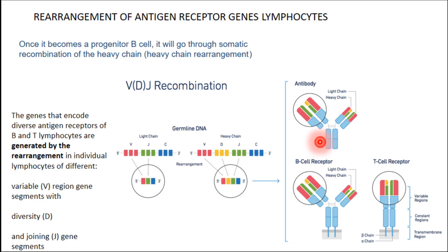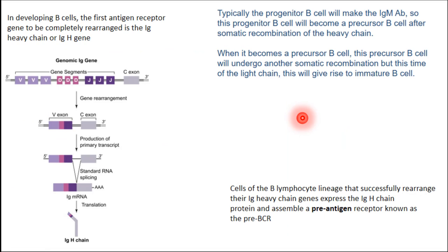Well, the answer is there are no single gene–single protein approach here. Rather, we have a very strange phenomenon that is very unique to those genes that encode antibodies or T-cell receptors. This phenomenon that evolved is called somatic recombination, or somatic rearrangement.